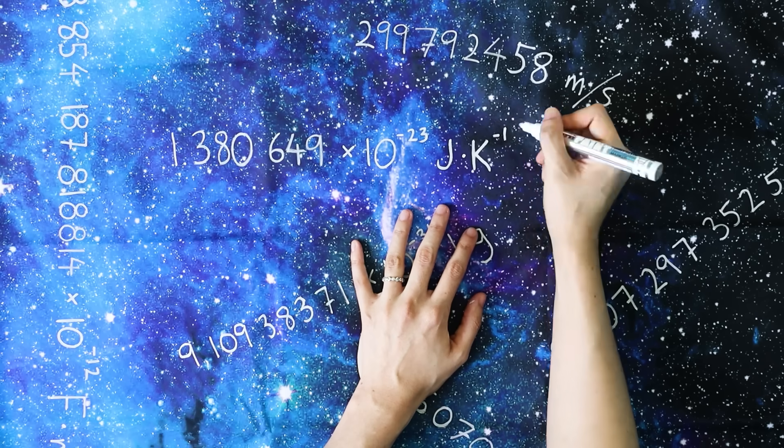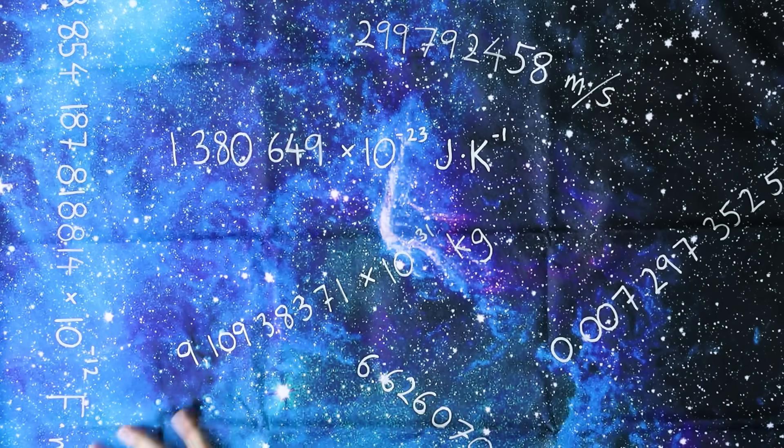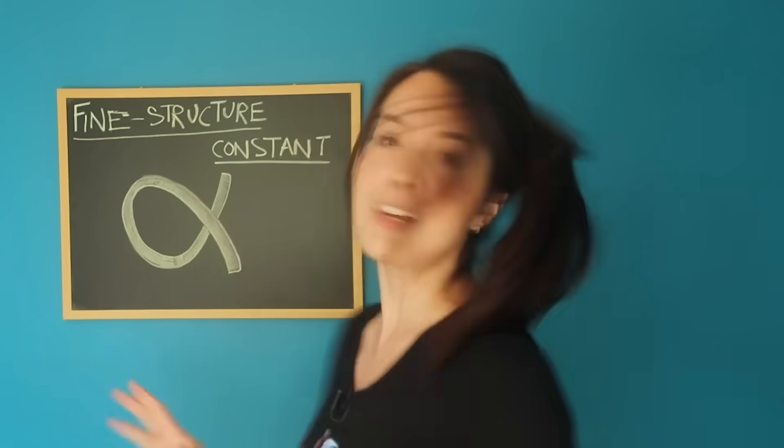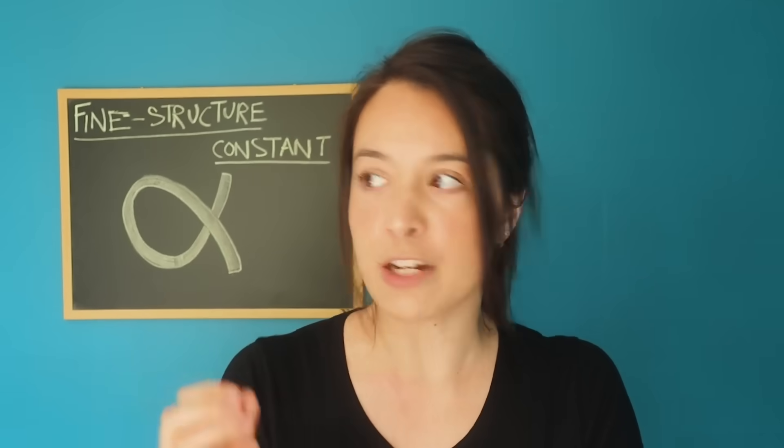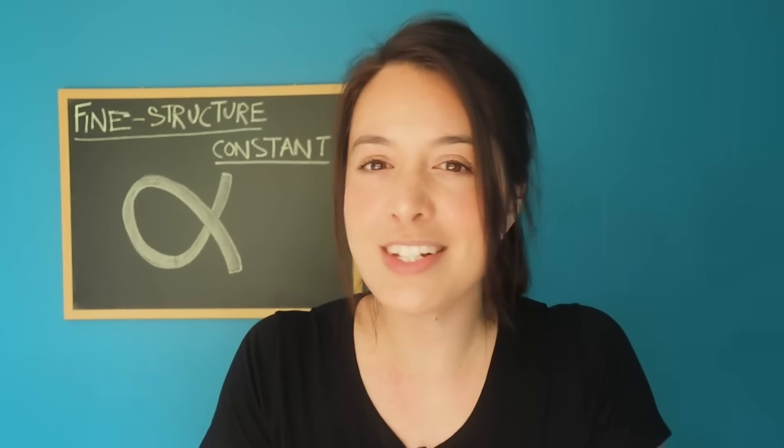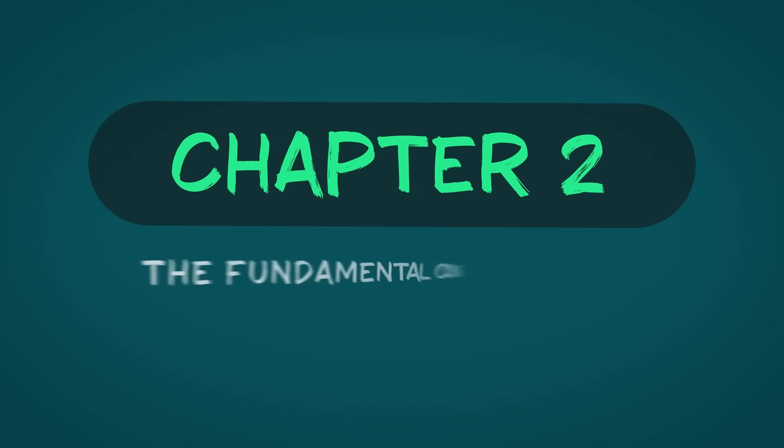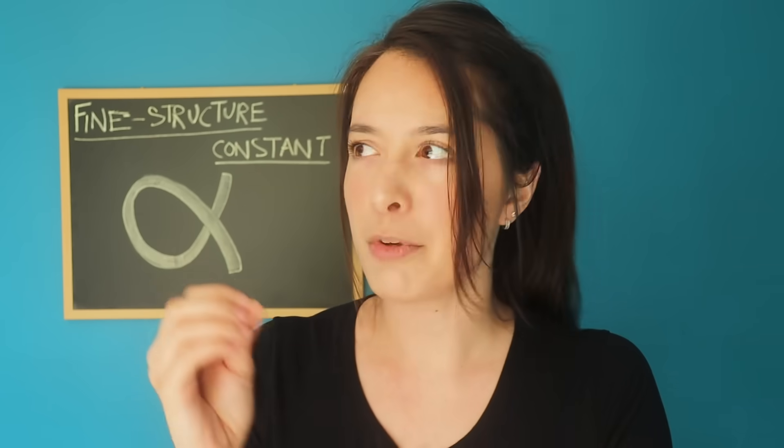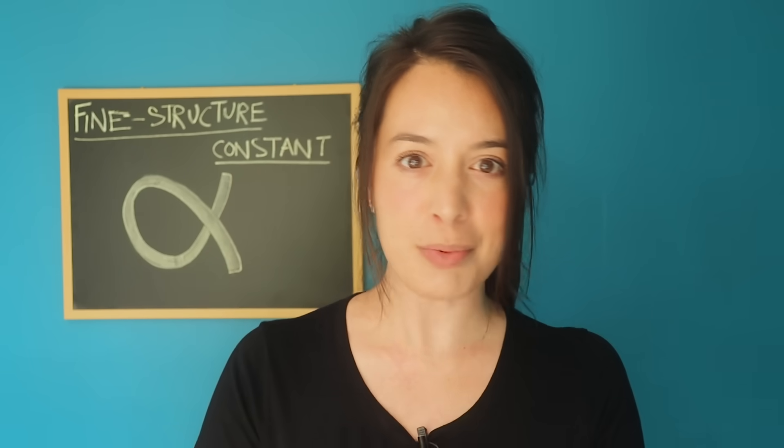They have to be experimentally measured. Nature kind of just has to tell us what they are, and no one knows why they have the values that they do. As far as we know, these numbers are just written into the fabric of the universe. Even though they're a bit of a mystery, the constants aren't causing any trouble. Or, so we thought. Theories are starting to arise that are making scientists question the constantness of the constants.